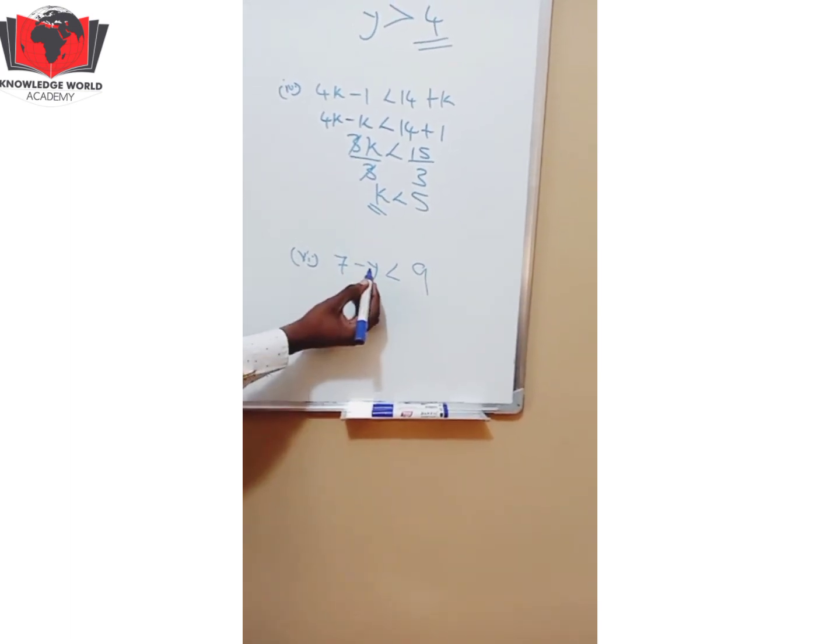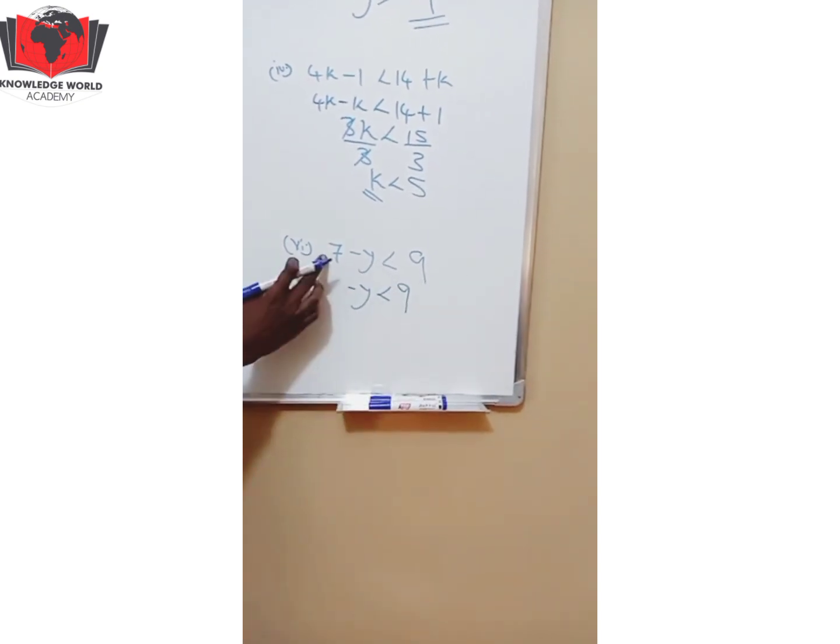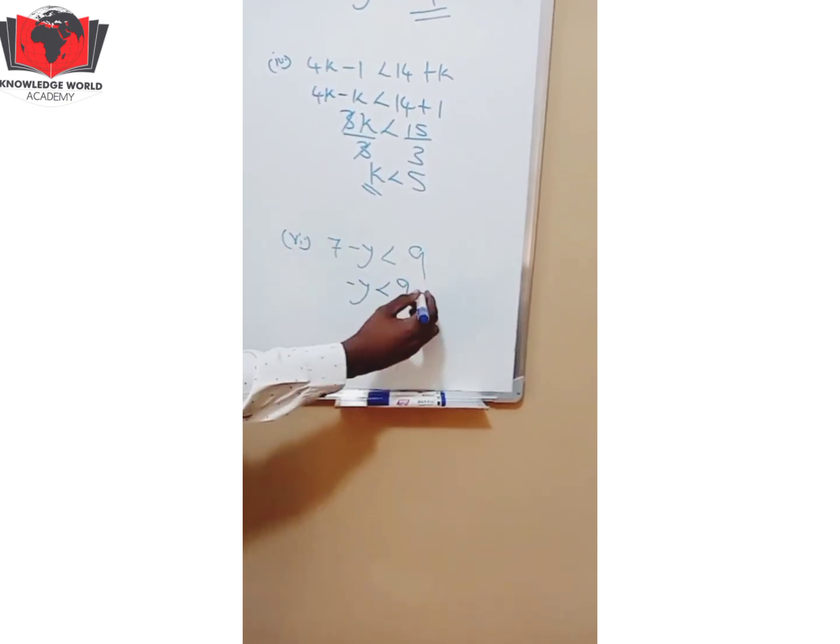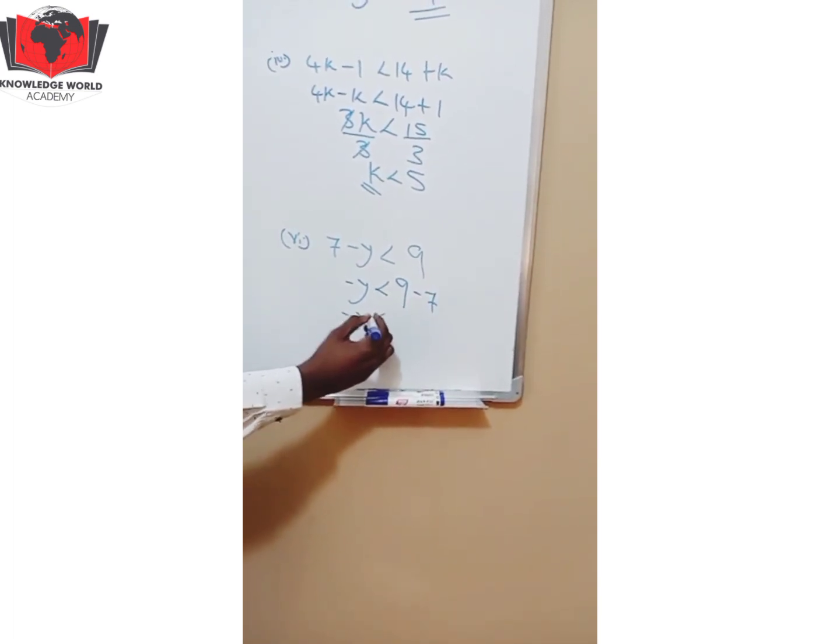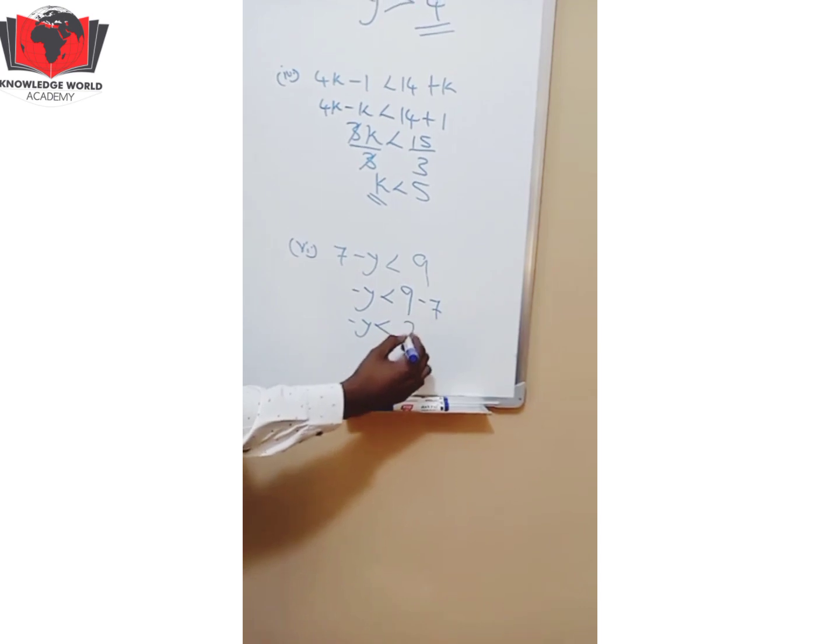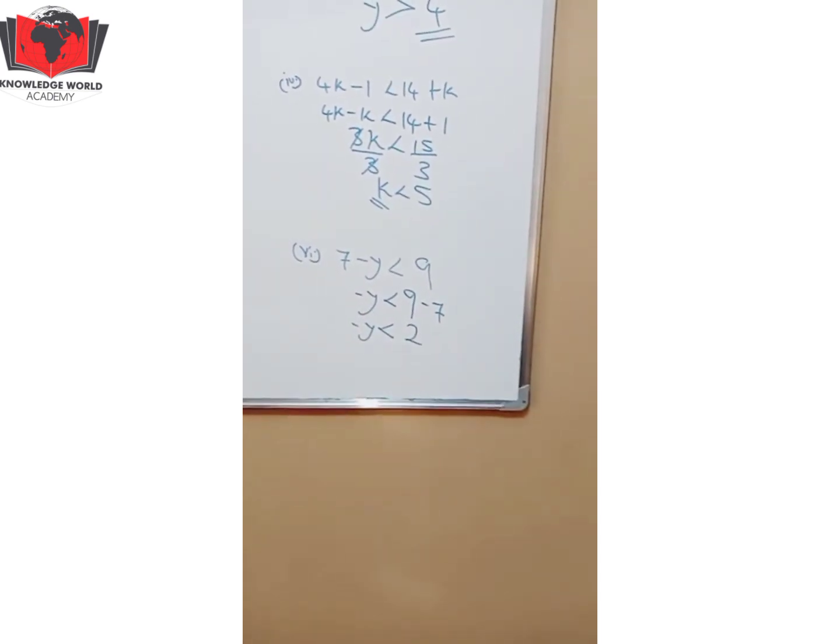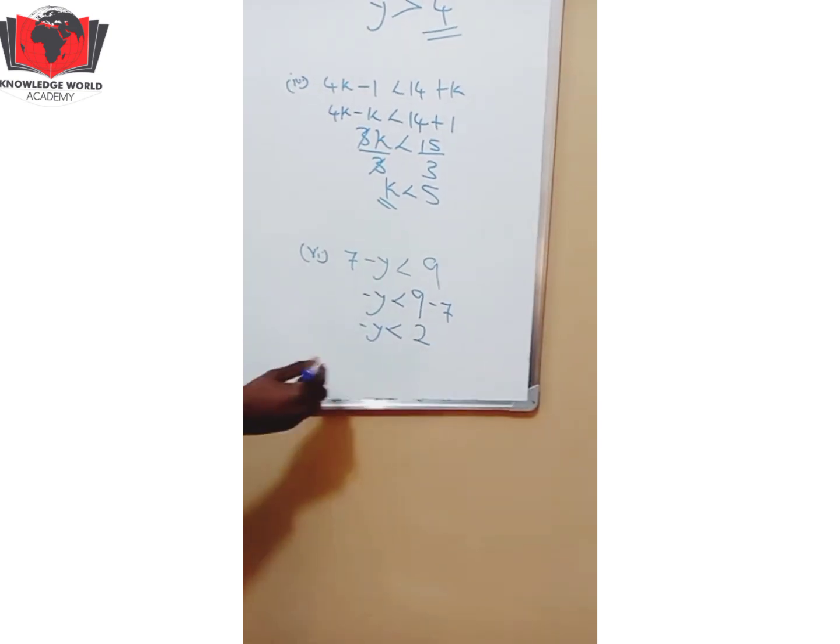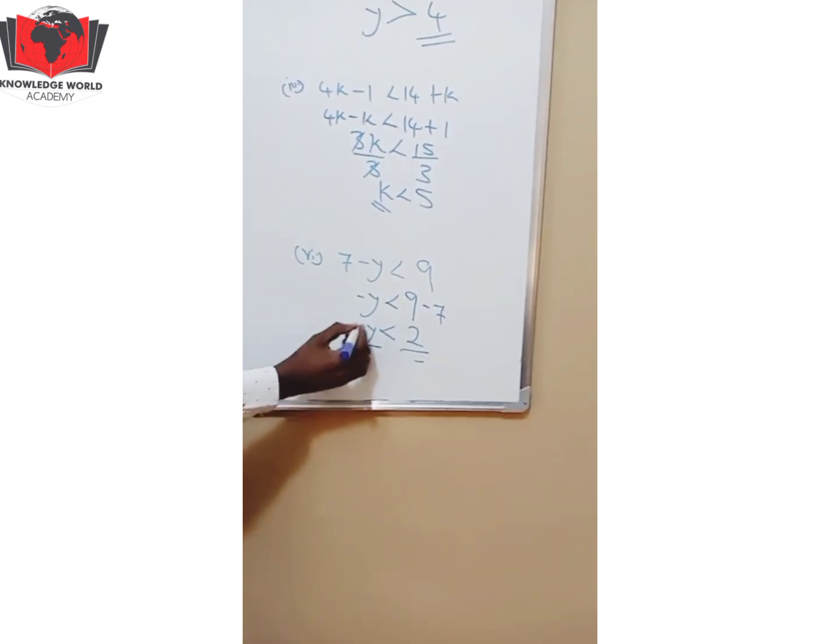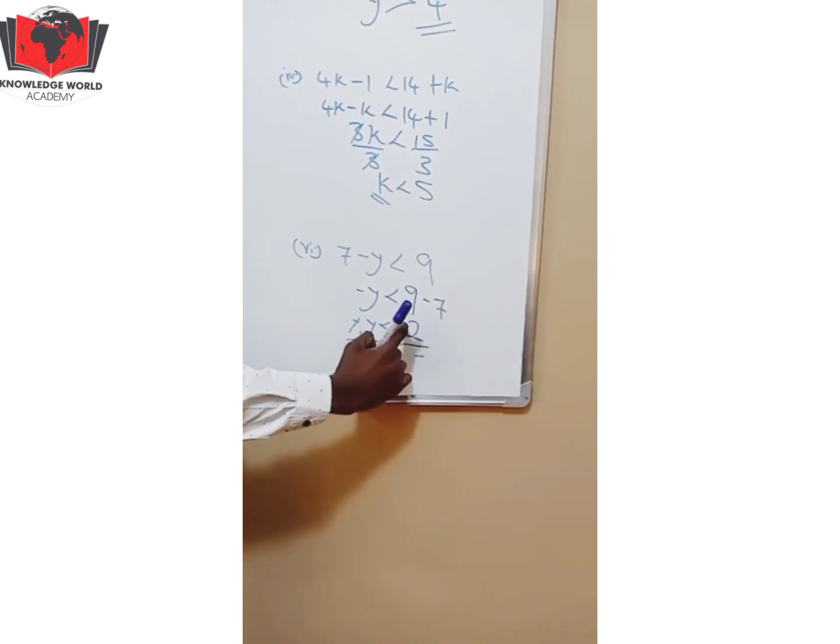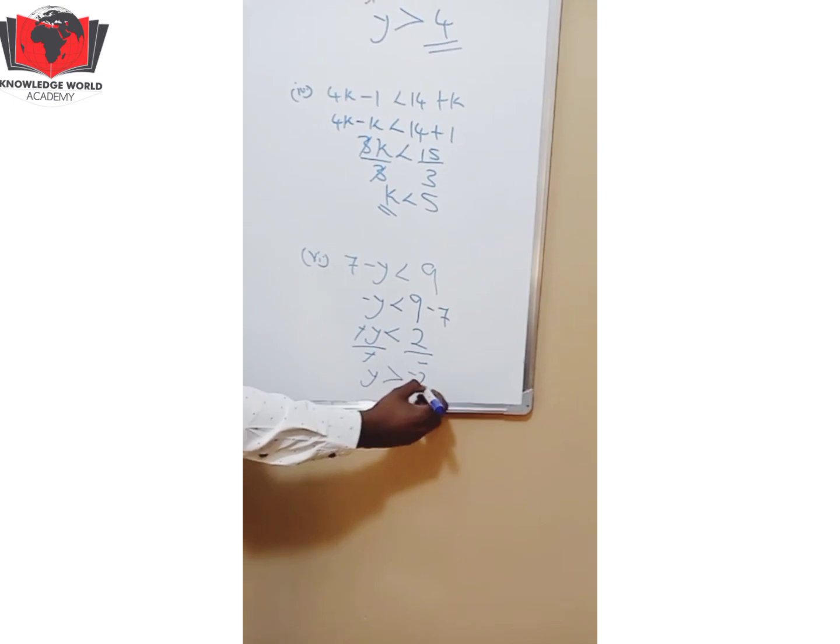You see -Y comes -Y. Less than 9. This is +7, go to the other side -7. So you have -Y < 9 - 7, 2. But you know that there is no negative Y. So over -1, over -1. What am I dividing by? A negative. So I am changing my sign. So Y > -2.